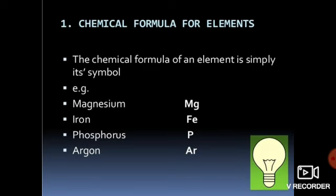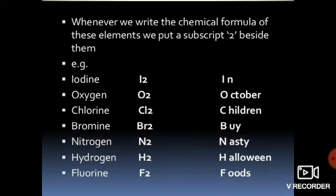There are various rules to write these formulas. The first rule: you have to write the symbol of each element. For example, to write the chemical formula of magnesium chloride — the symbol of magnesium is Mg and the symbol of chlorine is Cl.